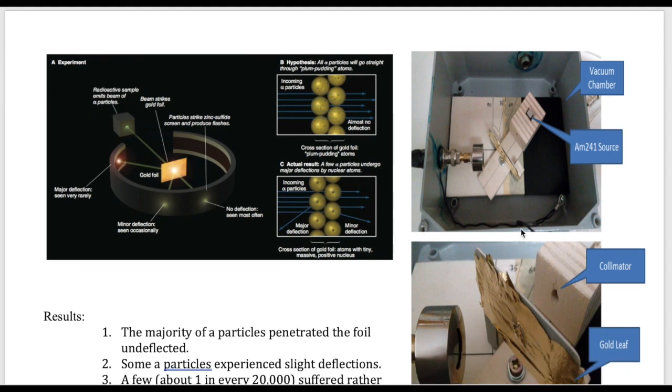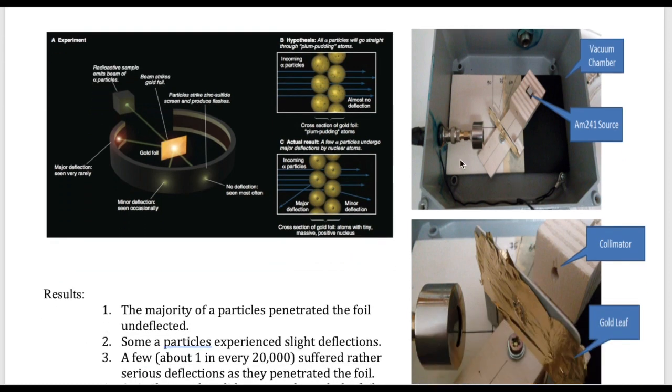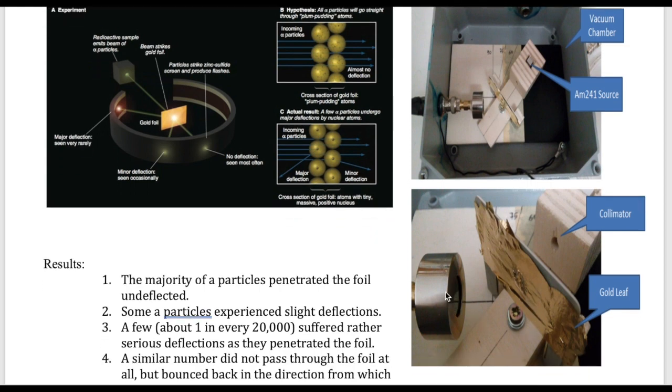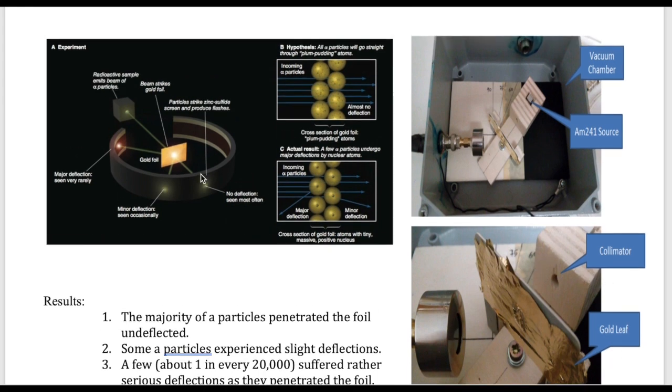So these two pictures here is just showing the look from the top of the instrument that Rutherford was using. And here's the gold foil. Here's the source of the alpha particle. And then here's the detector. Now, what's interesting is he did notice that almost all the particles went through. So that was matching expectation.